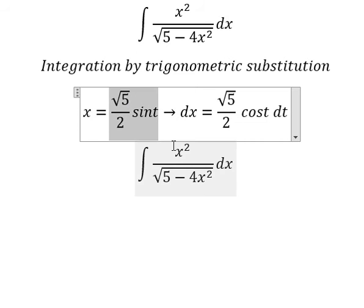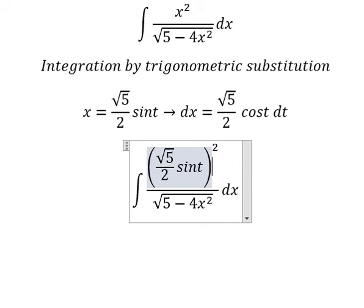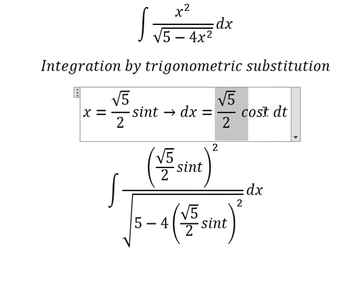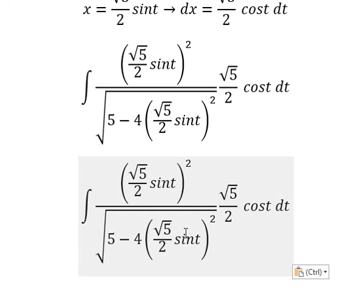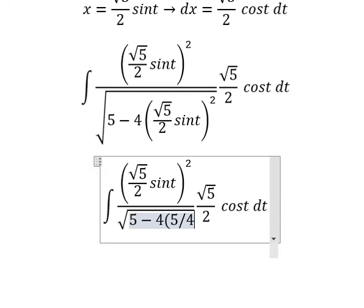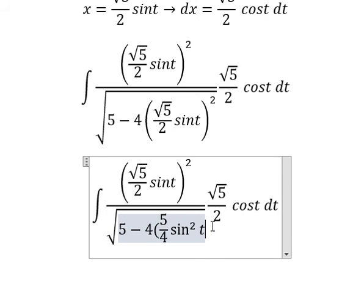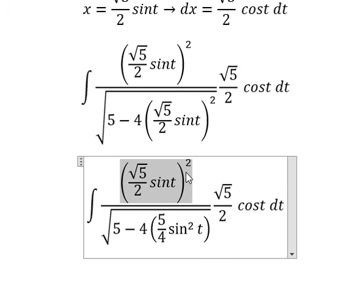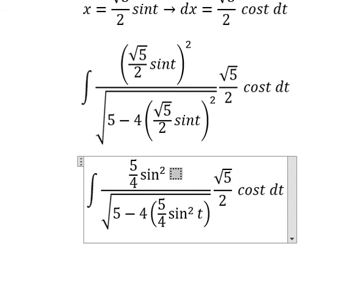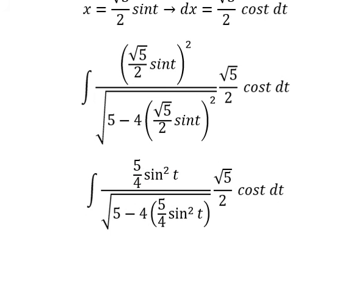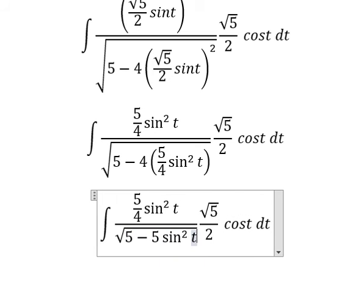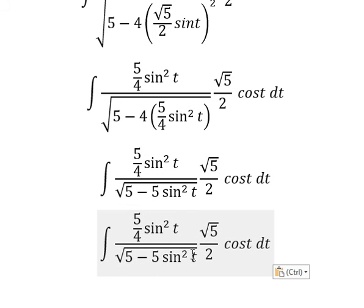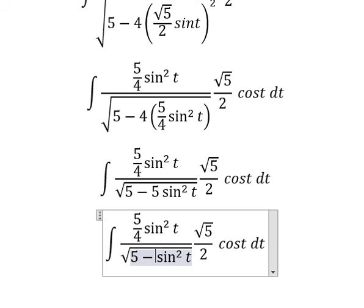I will substitute this in. For x, we substitute with our expression, so we have 5 over 4 sin²(t). Number 4 and number 4 cancel, and for number 5 and number 5 we apply factorization.